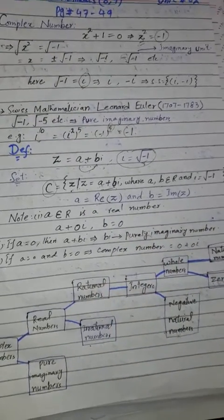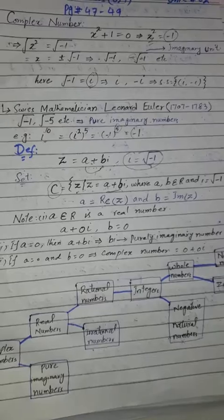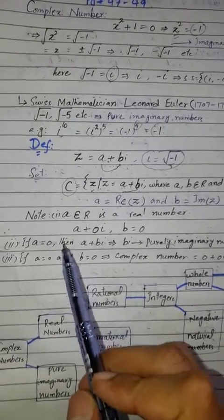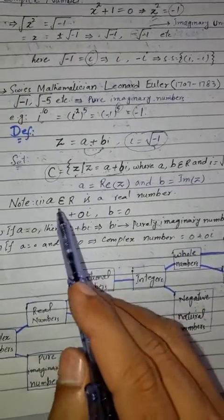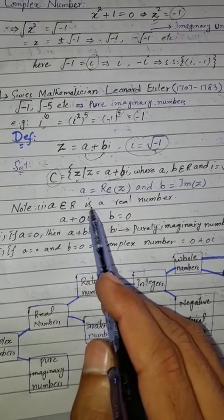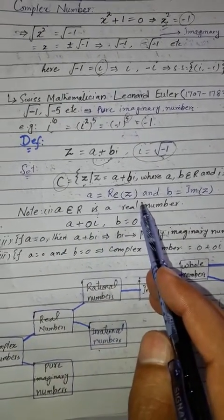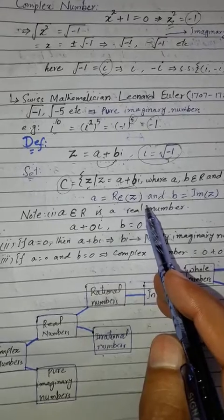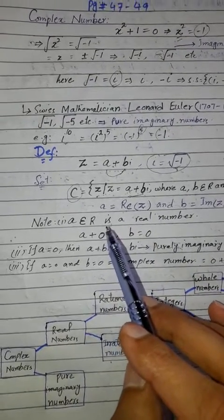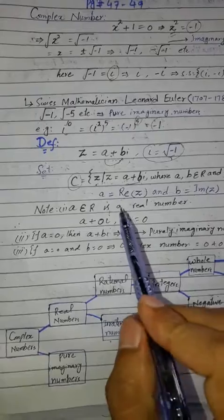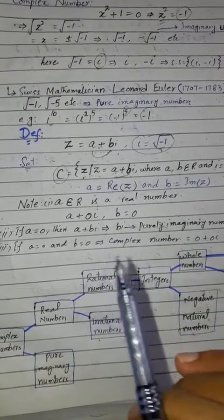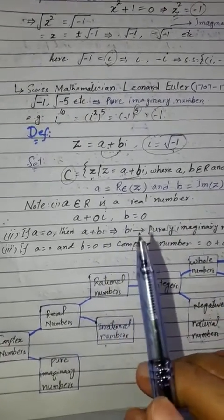Now here is a very interesting and important note: A belongs to the real numbers. Remember that each real number is a complex number, but not every complex number is a real number.